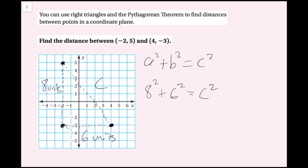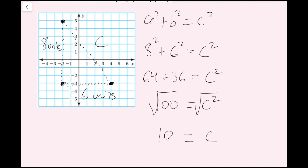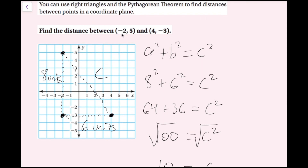8 squared is 64 and 6 squared is 36, which equals C squared. Adding them up gives 100. Taking the positive square root of both sides, I get 10, because 10 times 10 equals 100. So the distance between negative 2 comma 5 and 4 comma negative 3 is 10 units.